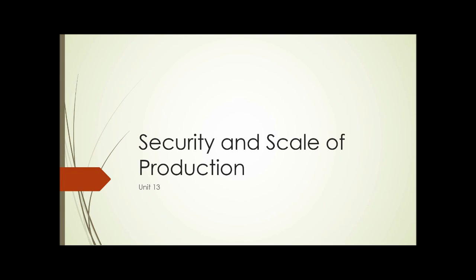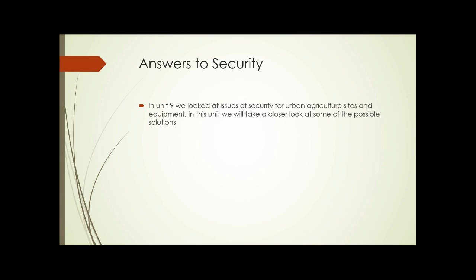Unit 13: Security and Scale of Production. In Unit 9, we looked at issues surrounding security for urban agricultural sites and equipment. In this unit, we'll take a closer look at some of the possible solutions. We also looked at scale of production in Unit 9, and we'll take a further look at that in this unit.